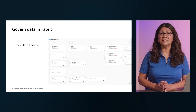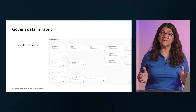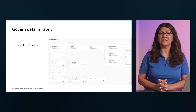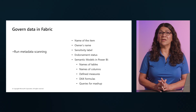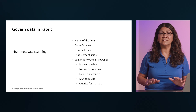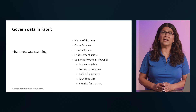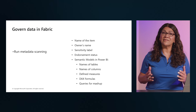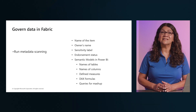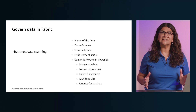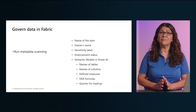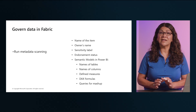Data lineage is the ability to track the flow of data through Fabric — where data comes from, how it's transformed, and where it goes. Metadata scanning facilitates governance by enabling cataloging and reporting of all metadata in your organization's Fabric items. The Scanner API is a set of admin REST APIs that allow you to scan Fabric items for sensitive data, including data warehouses, data pipelines, data sets, reports, and dashboards — both structured and unstructured data. Before metadata scanning can be run, it needs to be set up in your organization by your admin.